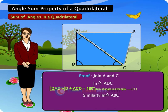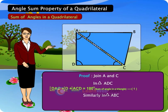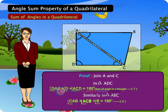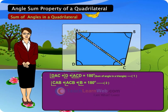Similarly, in triangle ABC, angle CAB plus angle ACB plus angle B is equal to 180 degrees.